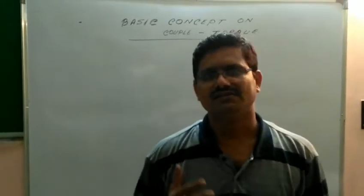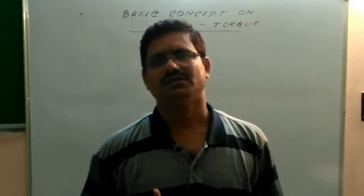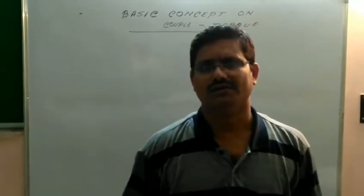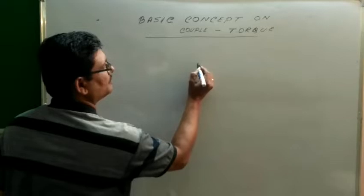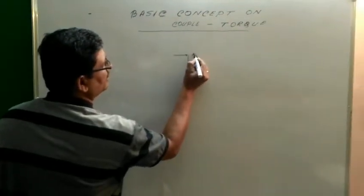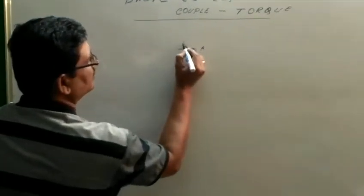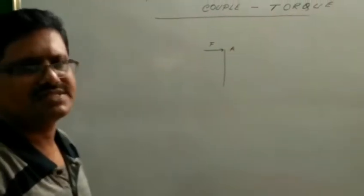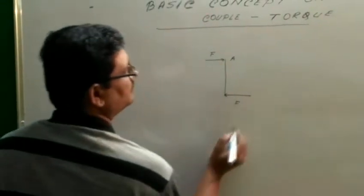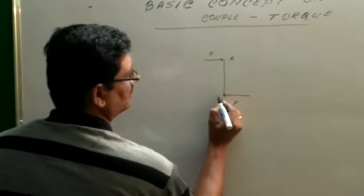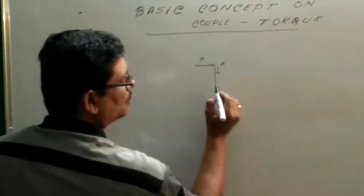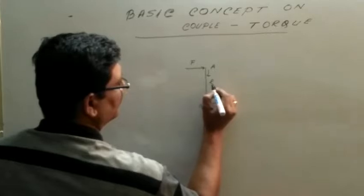Couple means the same amount of force acting in opposite directions on a body. A force is acting here at point A, and another force is acting at point B of the body. Now the length of the rod is L.